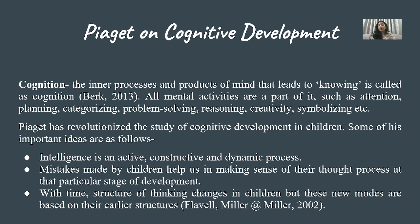Mistakes made by children help us in making sense of their thought process at that particular stage of development. From children's errors we can understand what cognitive development is occurring at that particular stage. The structure of thinking changes in children, but these new modes are based on their earlier structures.